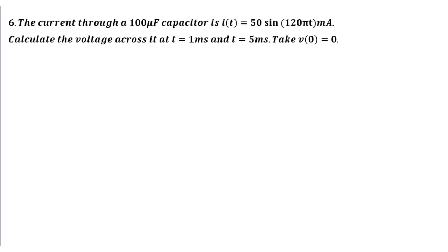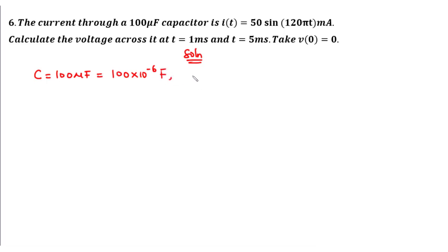Now let's try question six. The current through a 100 microfarad capacitor is I of t equals 50 sine 120 pi t milliamperes. Calculate the voltage across it at t equals 1 millisecond and t equals 5 milliseconds, taking v of zero to be equal to zero. So we have capacitance C equal to 100 microfarad, that is 100 times ten to the power negative six farads.